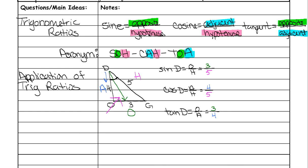Now we're going to look at angle G. The hypotenuse, of course, did not move — it stays in the same spot. But our opposite and adjacent are now changing. To find the opposite, you start in the angle you're looking at and draw right down the middle of that angle, and it points to your opposite side. The adjacent is just the side closest to it that is not the hypotenuse. So three is now our adjacent. Let's write our trig ratios — sine, cosine, and tangent of G.